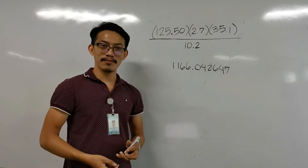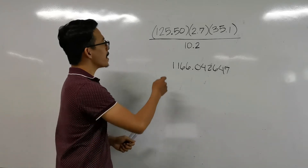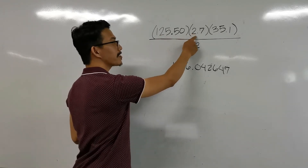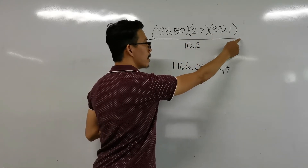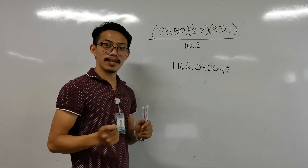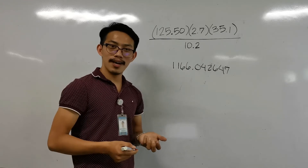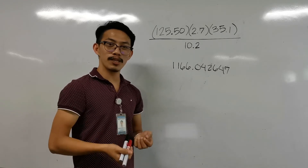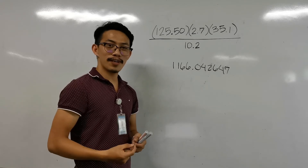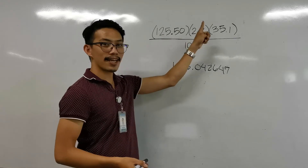Let's have another problem concerning multiplication and division with significant figures. We have 125.50 multiplied by 2.7 multiplied by 35.1, all over 10.2. Take note of the operations used — this time we only have multiplication and division, and we only have one rule for that: the least number of significant figures. So we can solve this using our calculator directly.